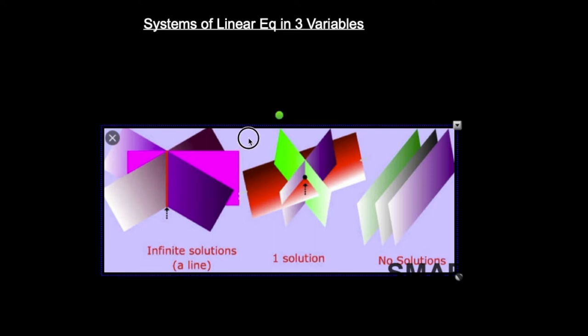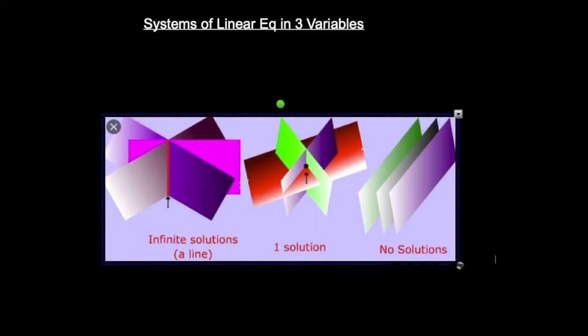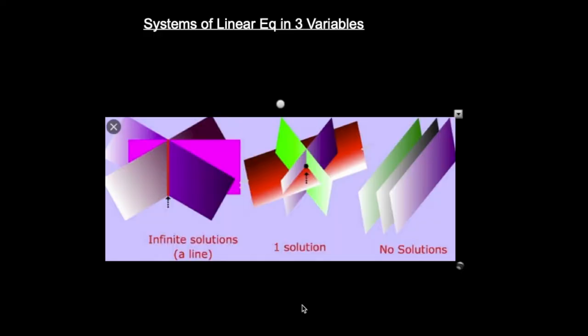If you have four unknowns, you want four equations, and so on and so forth. In this case I have three variables. Each of these linear equations, if we graph them separately, represents a plane — like a flat surface. So you're talking about the intersection of three planes.